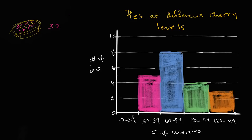You say how many pies have between 0 and 29 cherries? How many pies have between 30 and 59? Including 30 and 59.